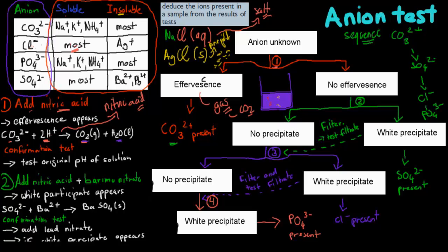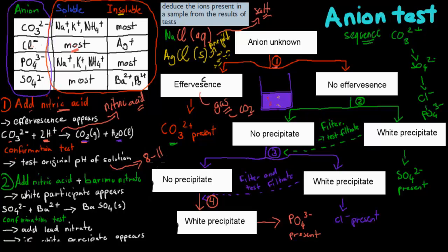After doing the first test, for each test we do we often do a confirmation test, which means we make sure that what we saw is definitely the case. In this case, that carbonate is present. We test the pH of the original solution — put a pH probe in, or use a universal indicator. If the pH of the original solution is around 8 to 11, which is alkaline, that means there's probably carbonate in it. The reason is that carbonate is alkaline, so we have an alkaline pH if carbonate is inside the solution. That's your confirmation test.